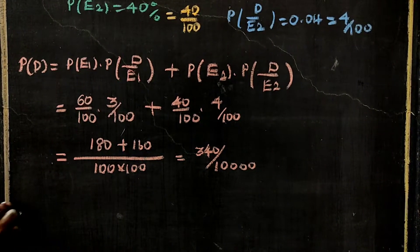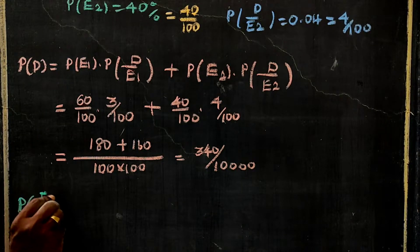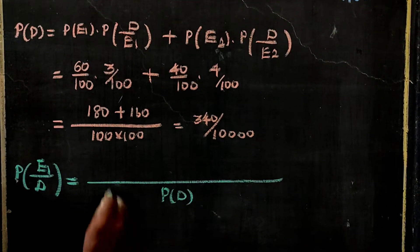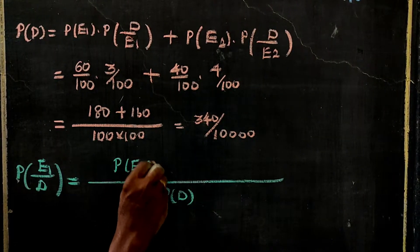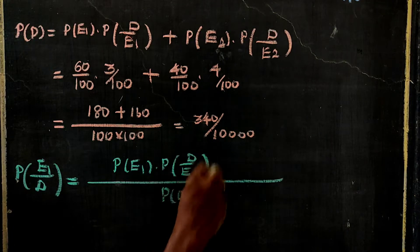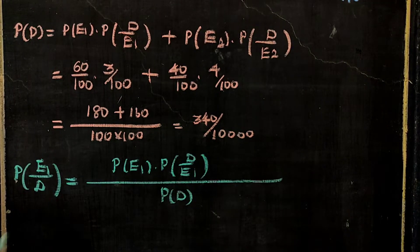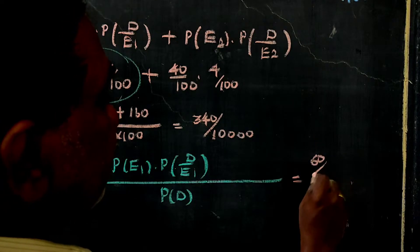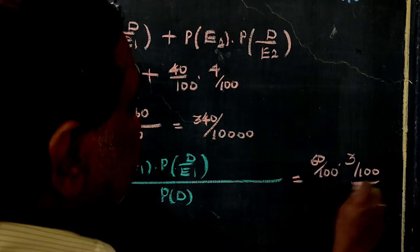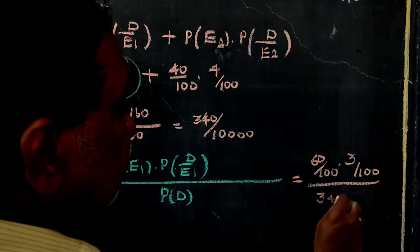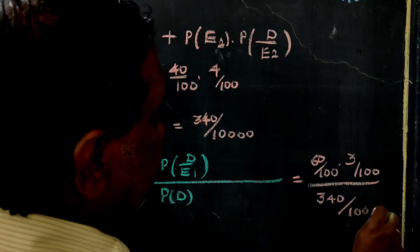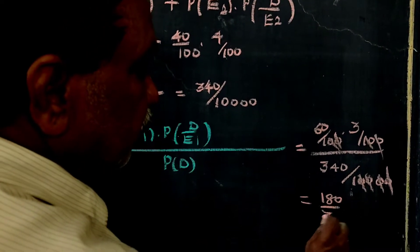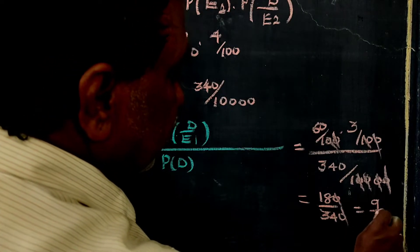Now we apply Bayes' theorem. The probability that Engineer-1 caused the defect is (60/100 × 3/100) divided by (340/10,000). Canceling the zeros, this gives 180 by 340, which simplifies to 9 by 17. For Engineer-2, it is (40/100 × 4/100) divided by (340/10,000), giving 160 by 340, which simplifies to 8 by 17.